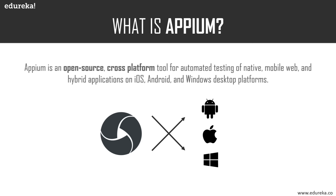Appium Desktop comes with a very intuitive application element inspector, which lets you inspect elements of your application in a much more efficient manner. If you'd like to learn about this inspector, you can check out the Appium tutorial linked in the description below.